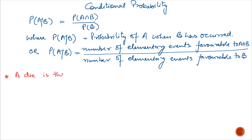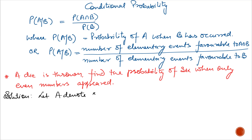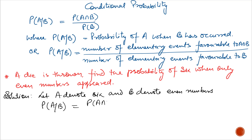We can explain with the help of an example. A dice is thrown. Find the probability of getting number 6 when only an even number has appeared. We have to find the probability of number 6, so we assume 6 is A and even number already appeared is B. Let A denote 6 and B denote even number. Now we have to find the probability of A given B, which equals probability of A intersection B divided by probability of B.